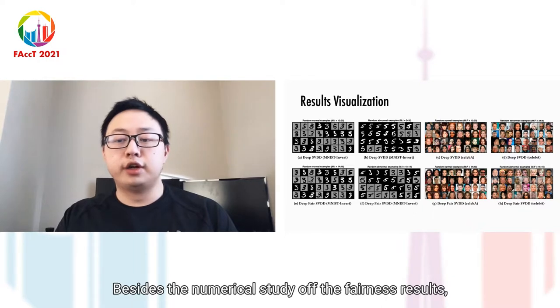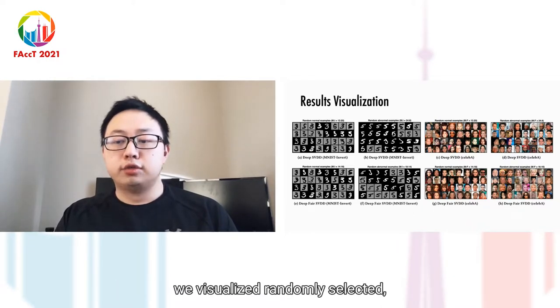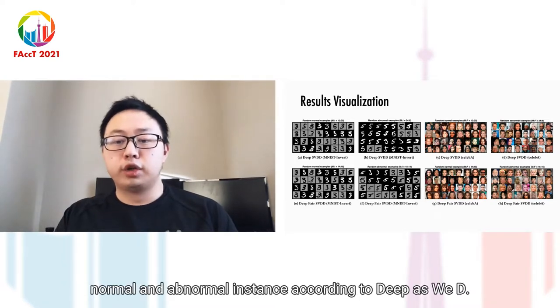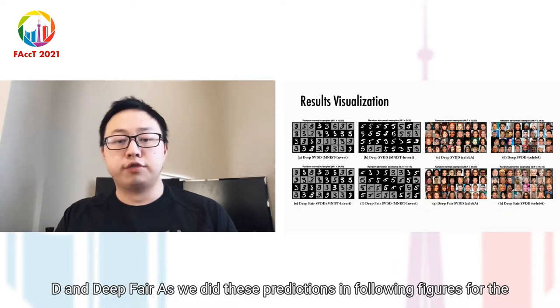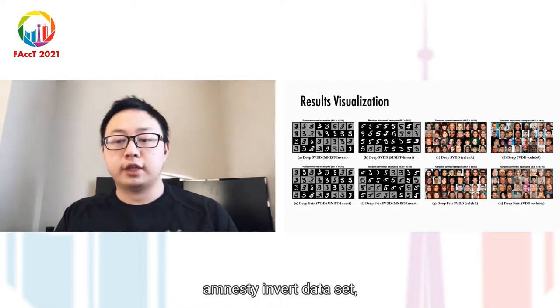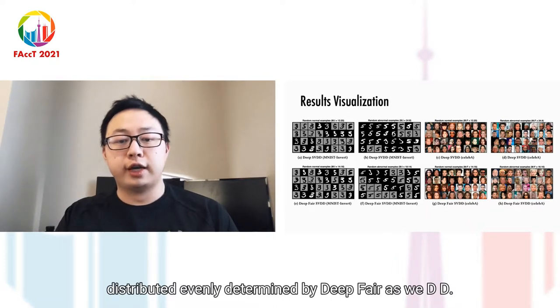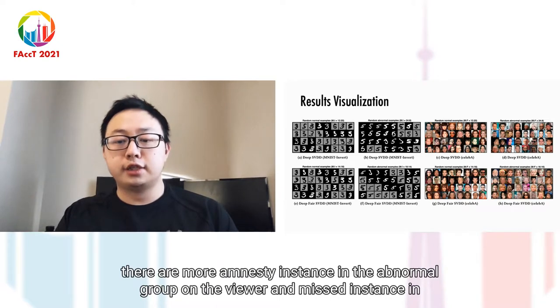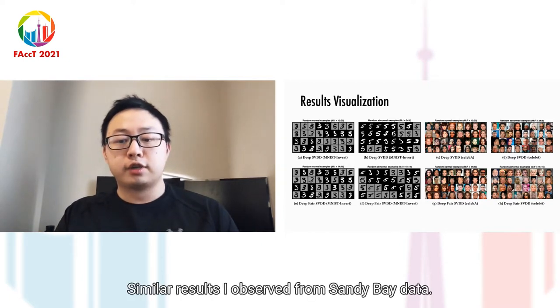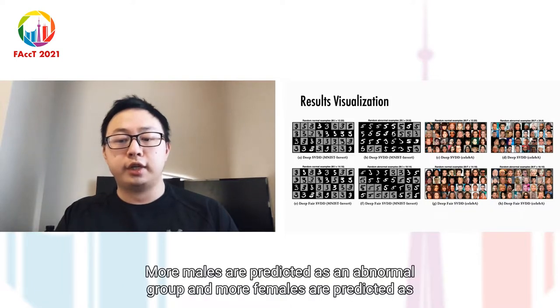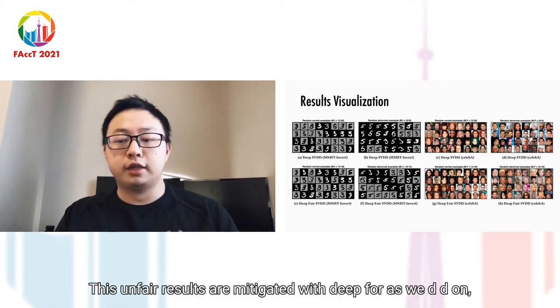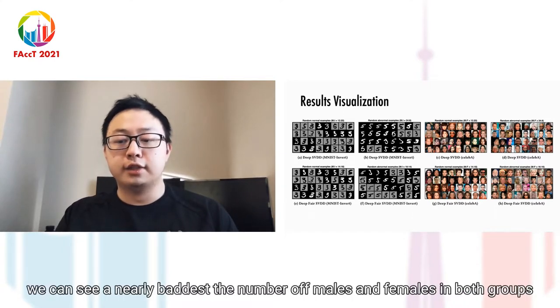Besides the numerical study of the fairness results, we visualize randomly selected normal and abnormal instances according to DeepSVDD and DeepFair SVDD's predictions. For the MNIST-INVERT dataset, we can see that both MNIST instances and inverted MNIST instances are distributed evenly as determined by DeepFair SVDD. On the contrary, there are more MNIST instances in the abnormal group and fewer MNIST instances in the normal group determined by DeepSVDD. Similar results are observed from CELEB-A data. More males are predicted as abnormal and more females as normal. These unfair results are mitigated with DeepFair SVDD, showing a nearly balanced number of males and females in both groups.